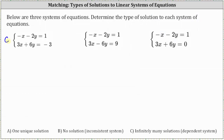Let's also look at this algebraically using the method of elimination or addition. When using this method, we want the x terms or y terms to be opposites so that when we add the equations together, those terms simplify out. Looking at the x terms, if the first equation's x term were negative three x, adding it to the second equation would eliminate x. So let's multiply both sides of the first equation by three.